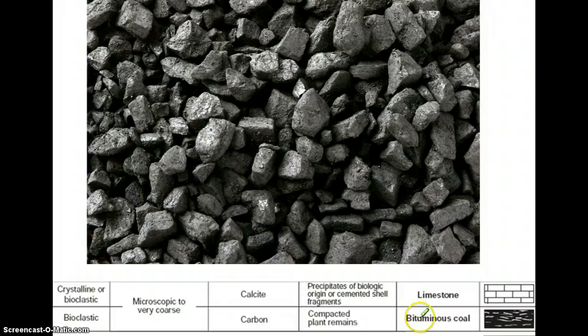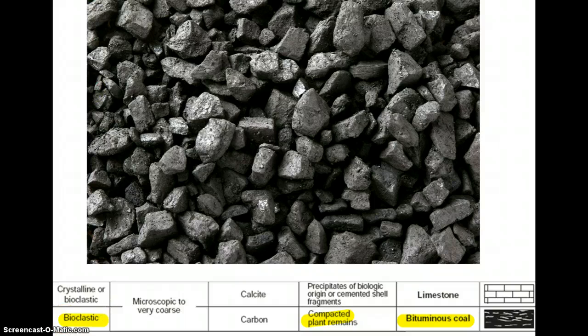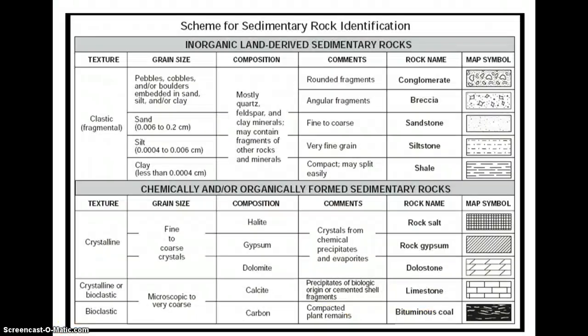The final rock is bituminous coal, which is made of carbon and formed from dead plant remains that have been compacted over millions and millions of years. So much pressure has basically turned the plants into coal — it also has a bioclastic texture. Those are all of your sedimentary rocks. Over the next couple of days, you'll be making observations and figuring out how to identify them by looking at the clues on this chart.